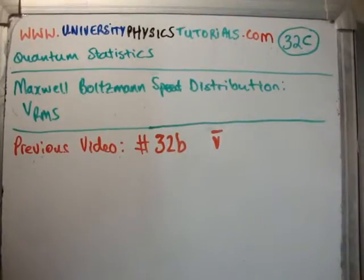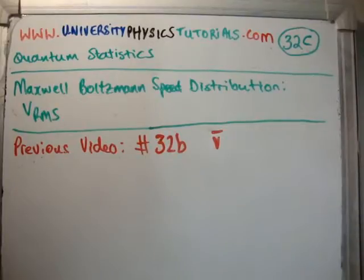Okay, in this video I'm going to continue on with my tutorials on quantum statistics. This is video number 32C and I'm going to discuss the Maxwell Boltzmann speed distribution, specifically I'm going to get V_RMS.